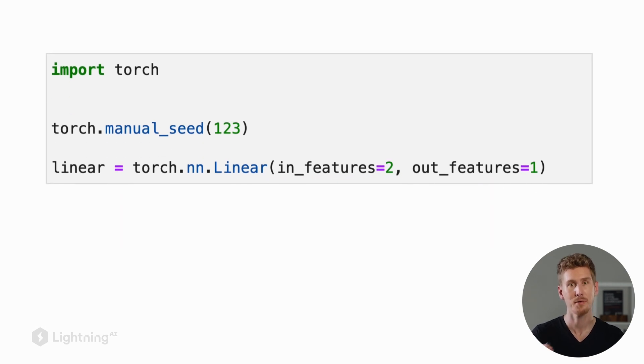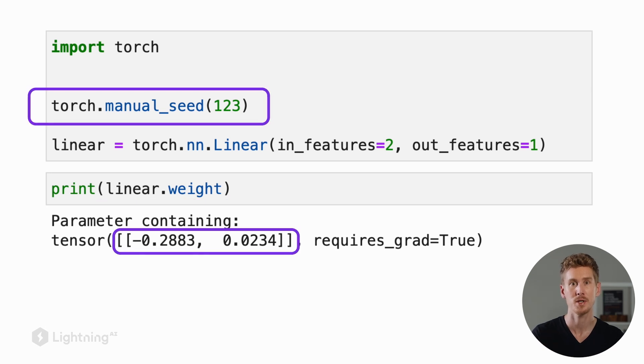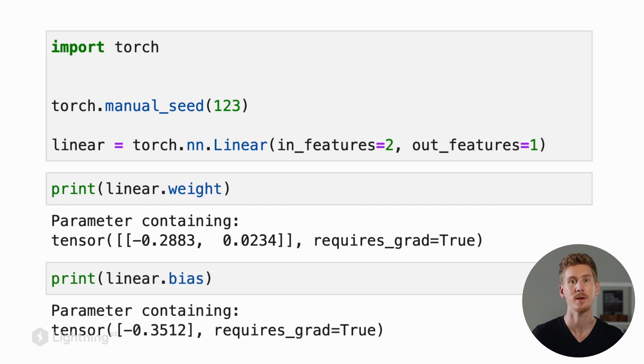After initializing this linear layer, it will have a weight vector which we can access with dot weight, and we can see the weight vector consists of two features because we defined two input features. If we use dot bias we can also check out the bias unit. You can see though that these are small random numbers instead of zeros that we used before in the perceptron.